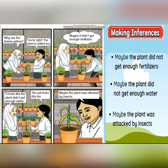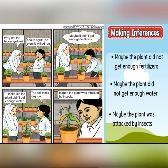Let's continue. 'Why are the leaves yellow?' — and the plant is wilted too. From this dialogue there are two observations: the leaves are yellow and the plant is wilted. So now we are going to make inferences about why these observations are seen. Maybe the plant didn't get enough fertilizers.